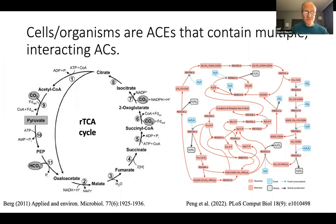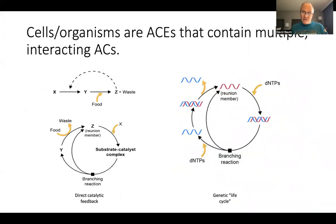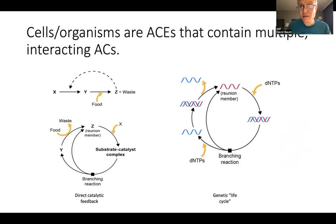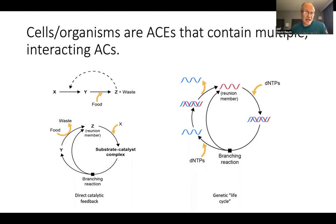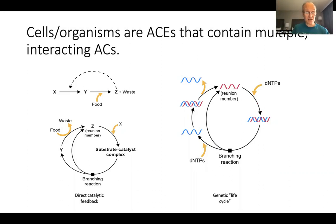There are also autocatalytic cycles within cells arising because of catalysis. An enzyme that catalyzes an upstream step that ultimately promotes the production of the catalyst also generates autocatalytic cycles that can be redrawn in that format by defining a substrate-enzyme complex that can separate in a branching reaction. And genes themselves form basically life cycles, where strand separation is a branching reaction, and that allows, indirectly, the generation of more members of this autocatalytic cycle over time.